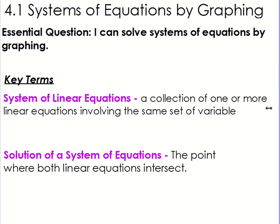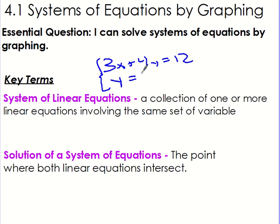A system is a collection of one or more equations that involve the same set of variables. So when we have an equation like 3x plus 4y equals 12, this is a linear equation because it has an x and a y. That's going to be paired up with another equation that also has an x and a y.